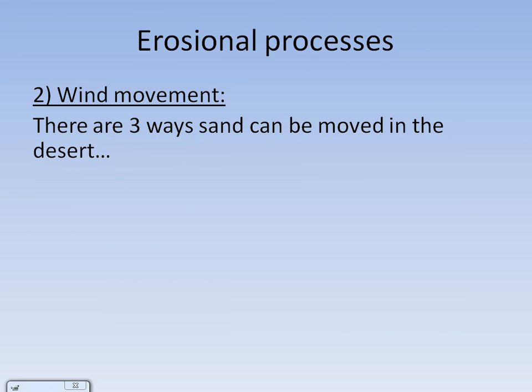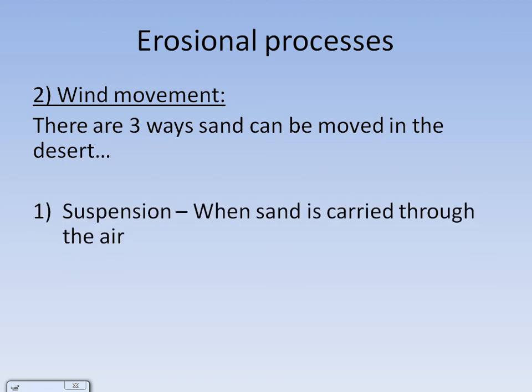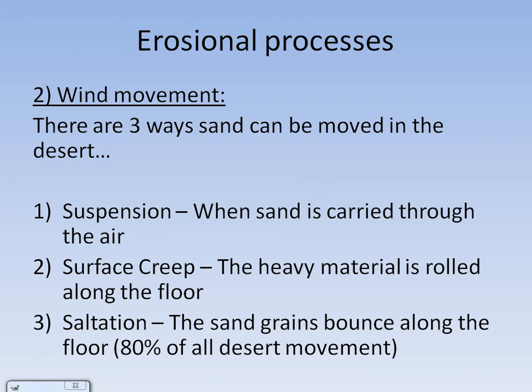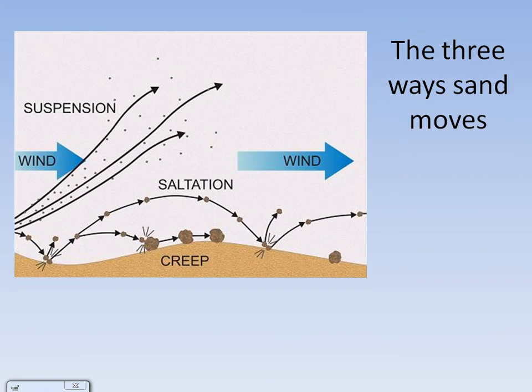Wind movement is another type of erosional process, and there are three ways sand can be moved in the desert. Suspension is when sand is carried through the air. Surface creep is when heavy material that can't be lifted is rolled along the floor. Saltation is when sand grains are bounced along the floor, which accounts for 80% of all desert movement. You can see in the diagram: suspension on the far left shows sand grains carried in the wind, saltation shows them bouncing along, and surface creep is the larger materials that can't be carried in the wind.